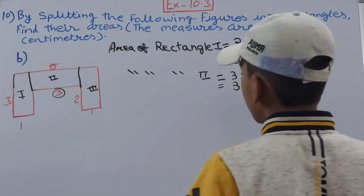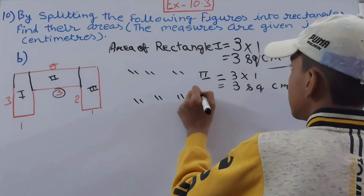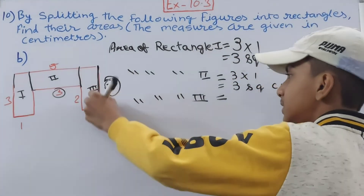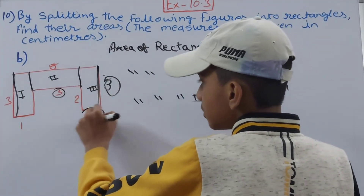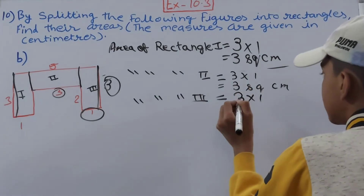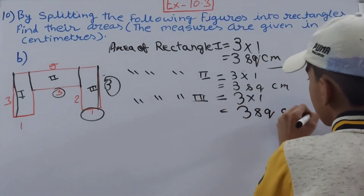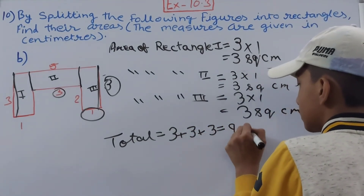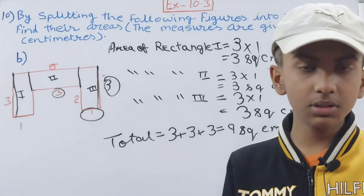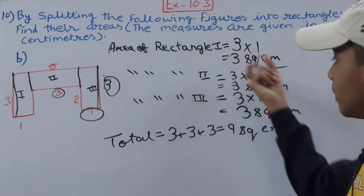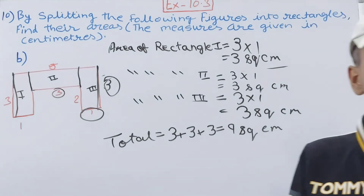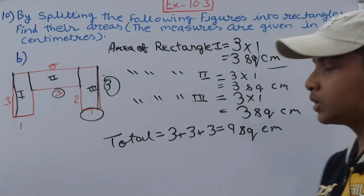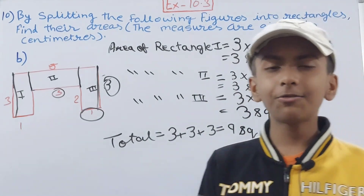Area of Rectangle 3: the length is 3 cm (since the opposite side is also 3) and the breadth is 1 cm, giving 3 × 1 = 3 square centimeters. Total area = 3 + 3 + 3 = 9 square centimeters. We couldn't just multiply 3 × 3 directly because we first need to verify that all three rectangles have the same area before adding them.